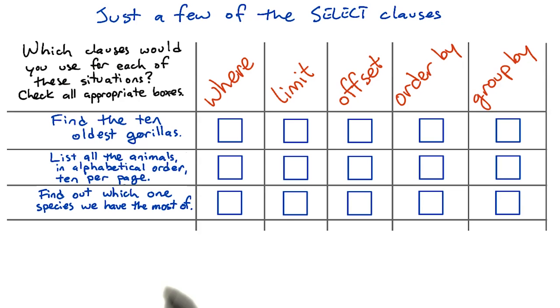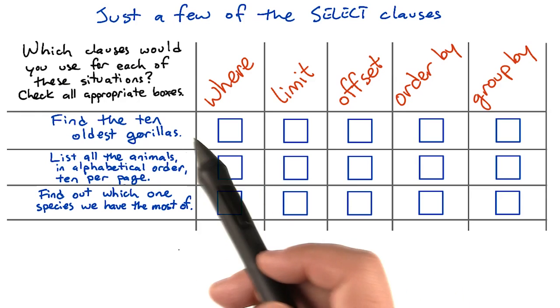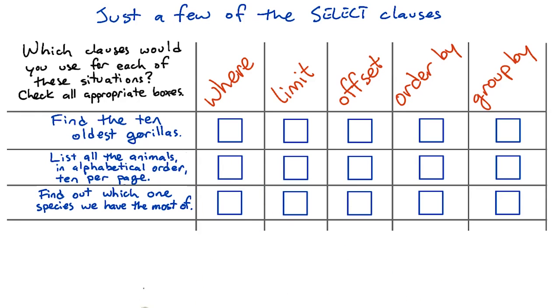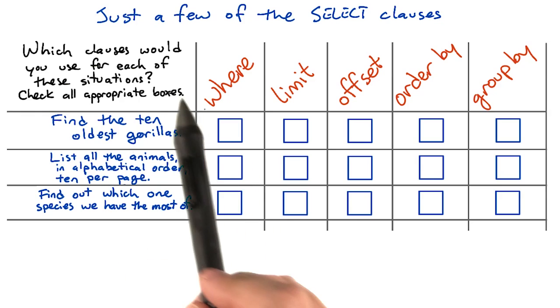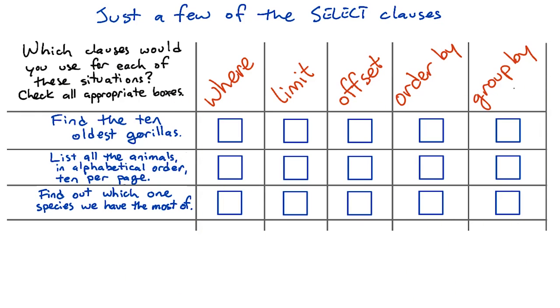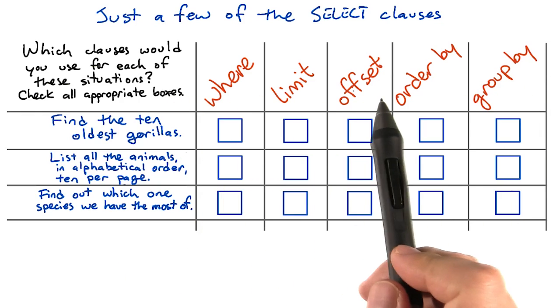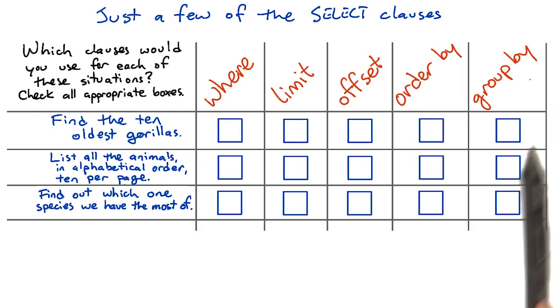So here's a quiz. Here are three different situations. Find the 10 oldest gorillas. List all the animals in alphabetical order, 10 per page. And find out which one species we have the most animals of. For each of these situations, which ones of these select clauses would you use? Where, limit, offset, order by, or group by. Check all of the boxes that fit.